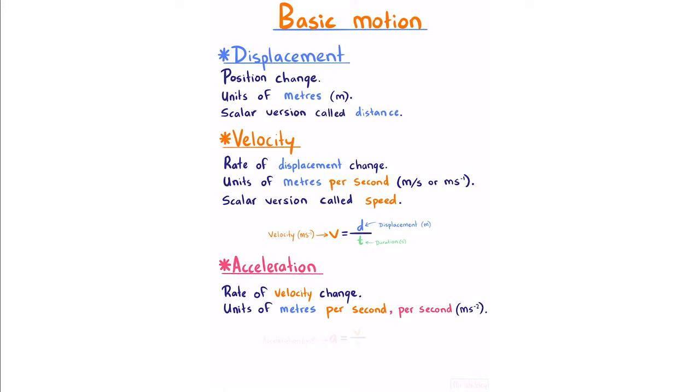Acceleration is the rate of velocity change; we measure it in units of meters per second per second, written as ms⁻². As an equation, acceleration is equal to the velocity divided by the duration.